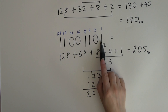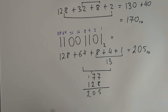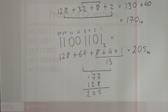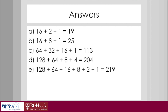The last digit is 1, so as expected the answer is an odd number. This video was about how to convert binary numbers into decimal numbers. In the next part you will see some practice questions to try yourself, with answers supplied. Pause the video while carrying out the calculations, then move on to the answers.